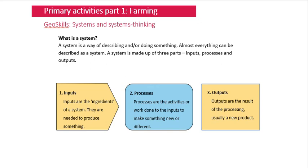Welcome to today's lesson on primary economic activities: farming. A primary economic activity is basically when you are getting something from the land — that can be from farming, fishing, forestry, or peat from bogs. So your three F's plus peat.